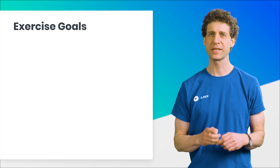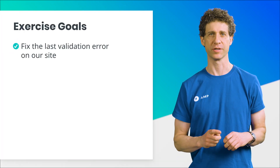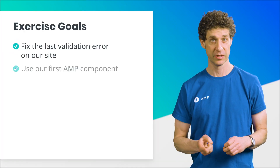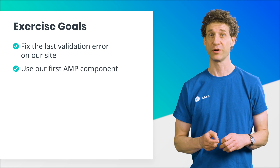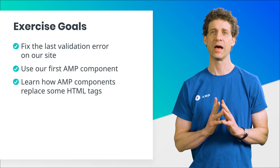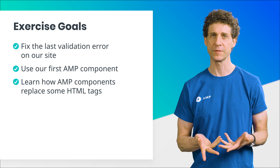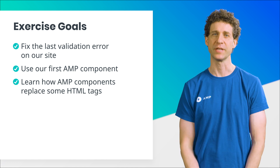In exercise 3, we'll learn to use our first AMP component, AMPImage. In this exercise, we will fix the image tag validation error on our site. We'll get to use our first AMP component, and we'll also learn how certain AMP components replace corresponding HTML tags.